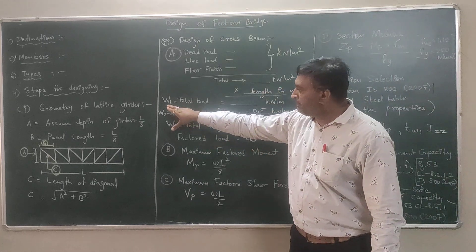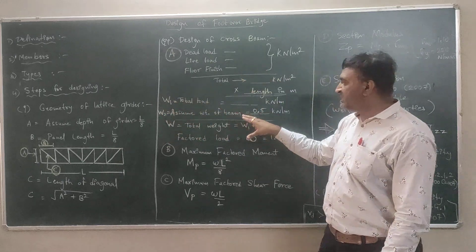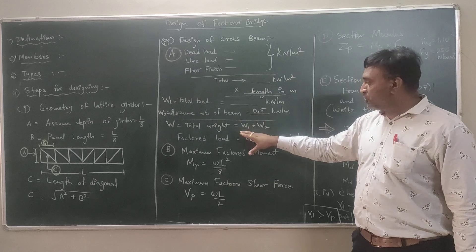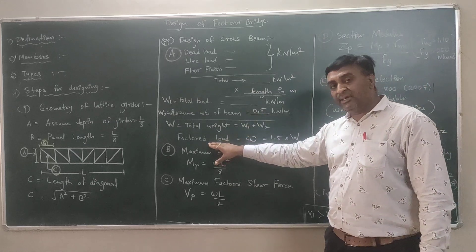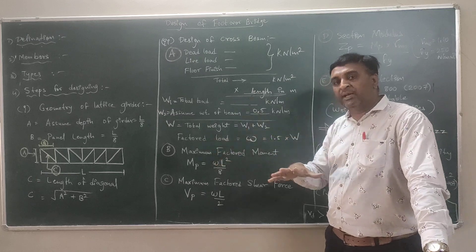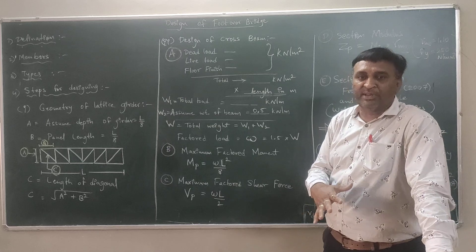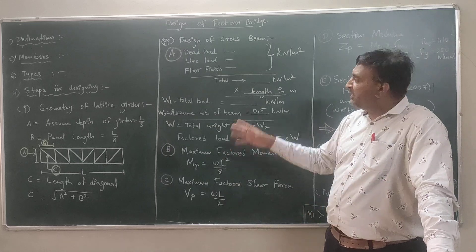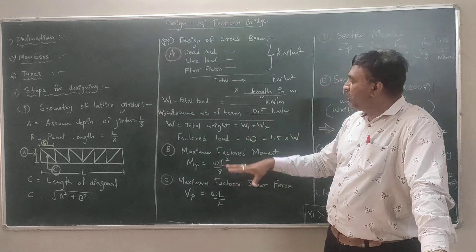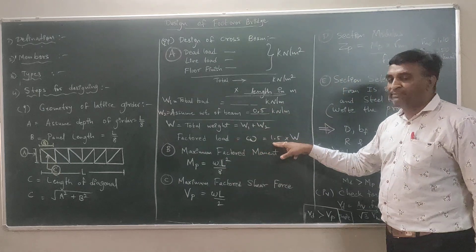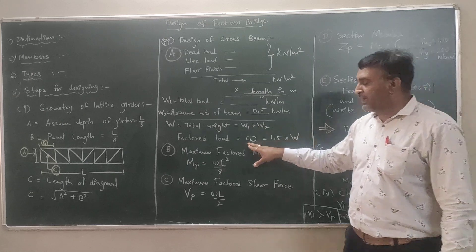Adding both gives a total load W = W1 + W2, where W1 is the total slab and finish load, and W2 is the assumed self-weight of the beam. Then we apply the load factor. Since we do not account for impact load, vibration, and other dynamic effects during calculation, the factored load is taken as 1.5 × W.